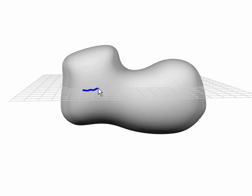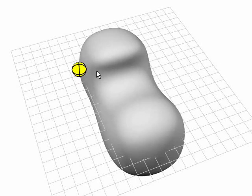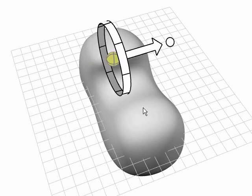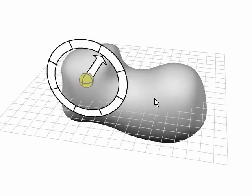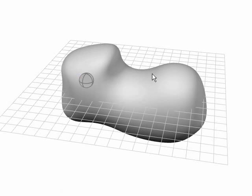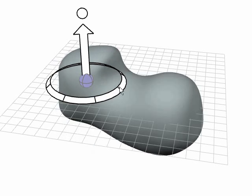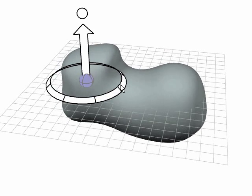Drawing a pigtail stroke drops a pivot point, which can then be moved around like other objects. Selected objects can be bound to a pivot by crossing it. Once bound, interaction is applied relative to the pivot point.